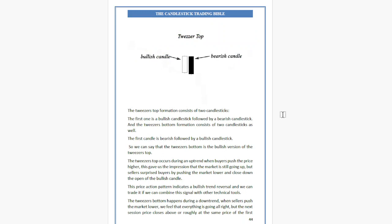The Tweezers Top formation consists of two candlesticks — the first one is a bullish candlestick followed by a bearish candlestick. The Tweezer Bottom formation also consists of two candlesticks — the first candle is bearish, followed by a bullish candlestick. We can say that the Tweezer Bottom is the bullish version of the Tweezer Top.